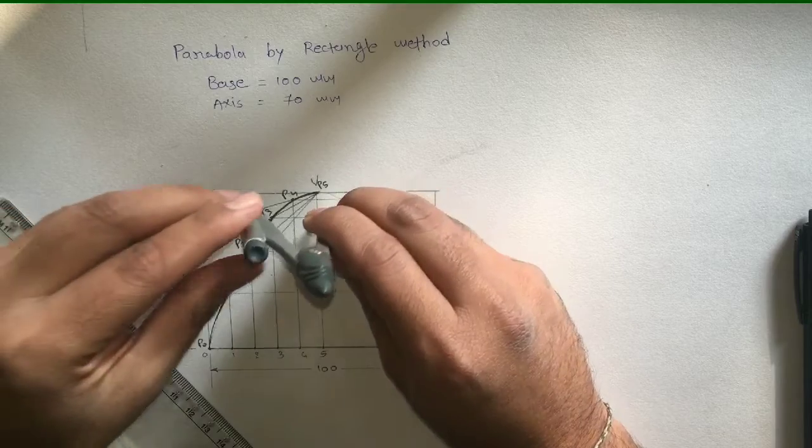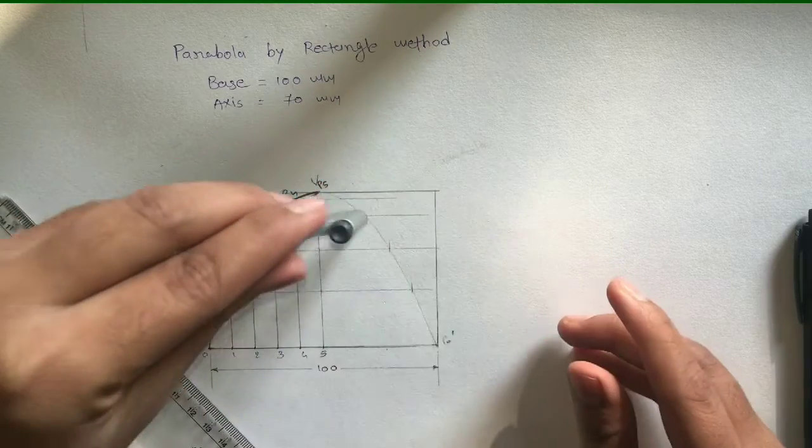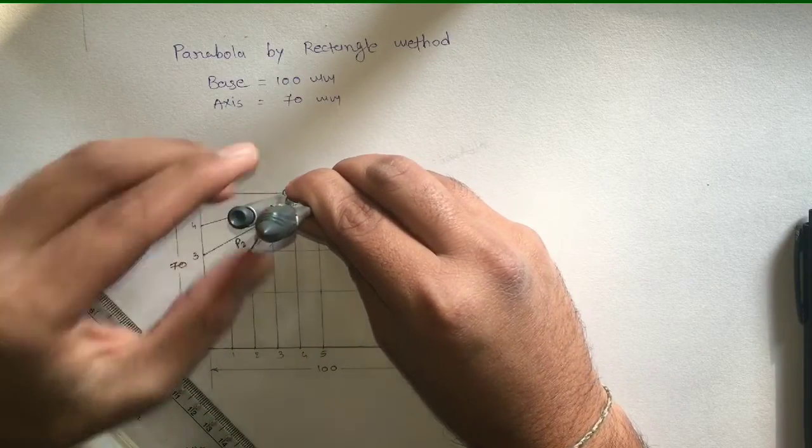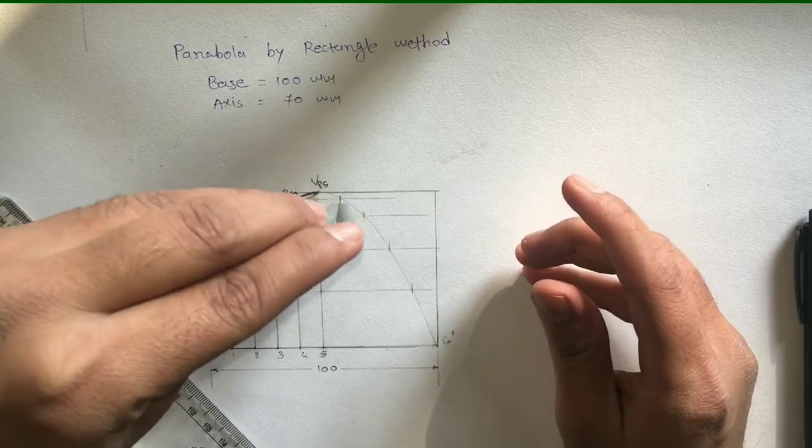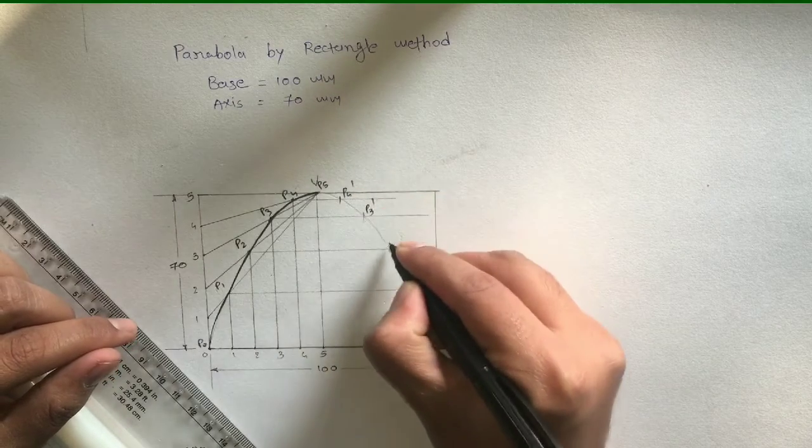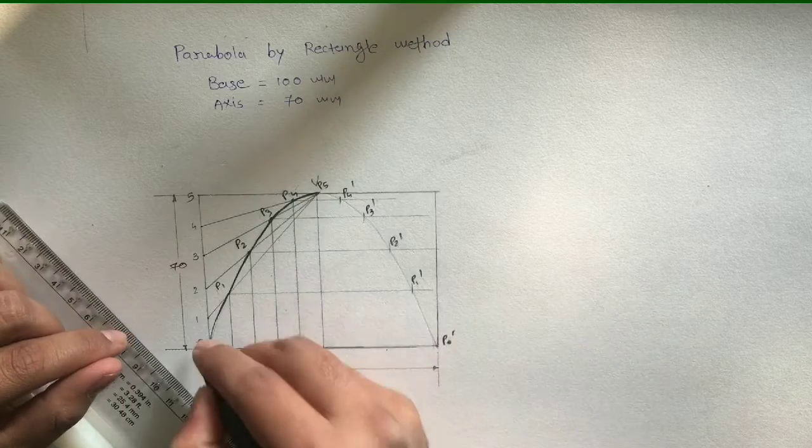Repeat the procedure for other points. So this is P4 dash, P3 dash, P2 dash, P1 dash, and P0 dash.